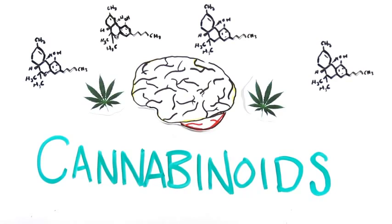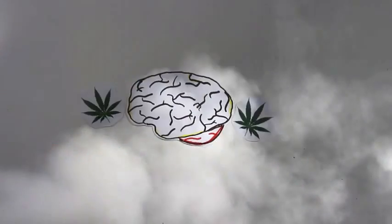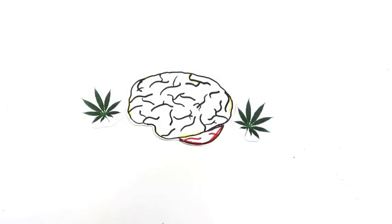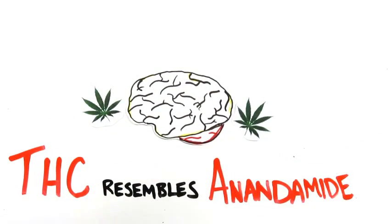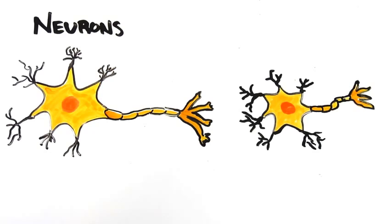Though naturally, these cannabinoids circulate in much lower quantities compared to the large influx imposed by smoking. Specifically the chemical tetrahydrocannabinol, or THC, resembles a natural transmitter called anandamide. These cannabinoids are specialized neurotransmitters released by neurons having just fired.